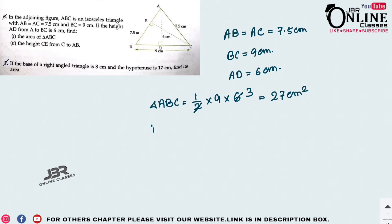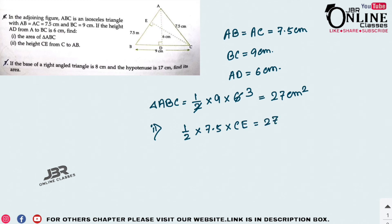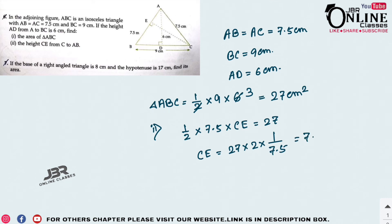Number 2: find the height CE from C to AB. If AB = 7.5 is the base and CE is the height, the area is still 27 cm². So CE = 27 × 2 ÷ 7.5 = 54 ÷ 7.5 = 7.2 cm.